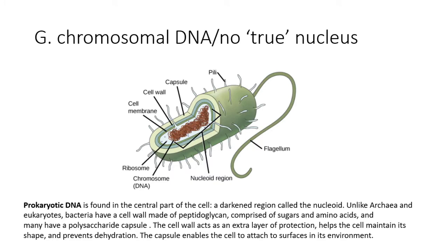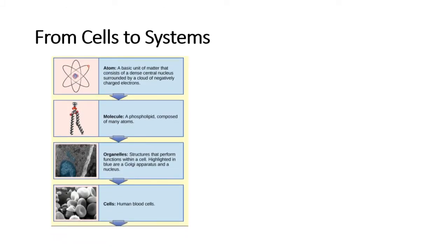Some cells contain aggregates of macromolecules surrounded by membranes. These are called organelles. Organelles are small structures that exist within cells and perform specialized functions.